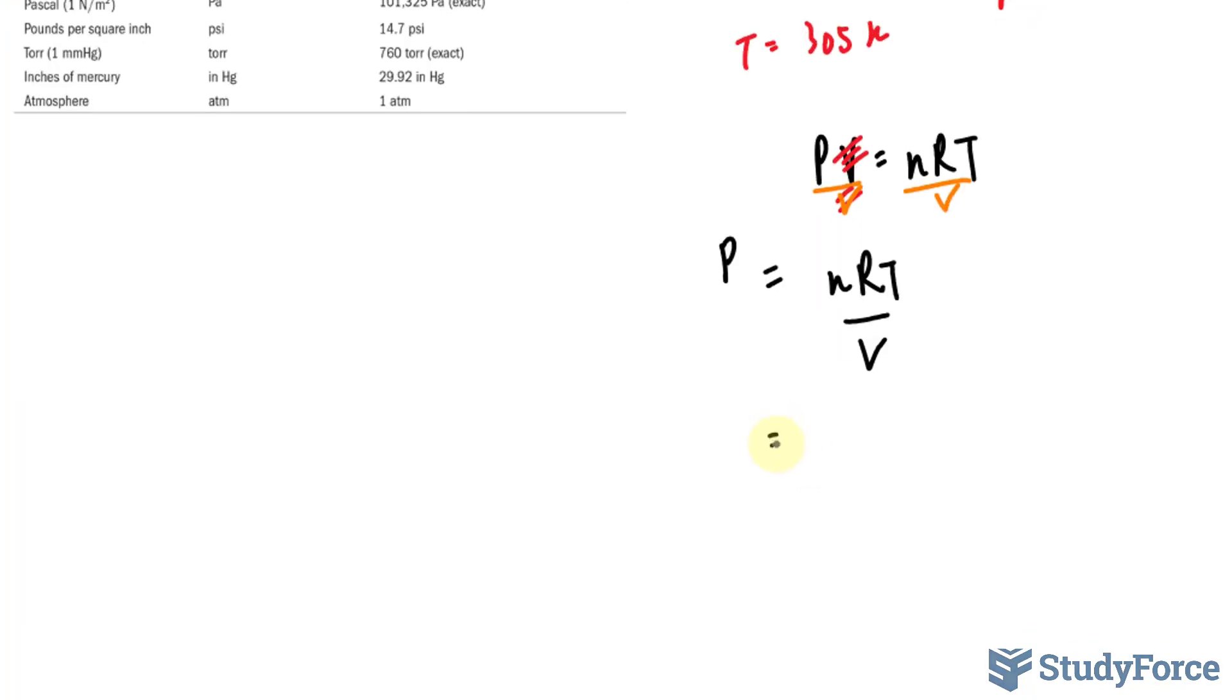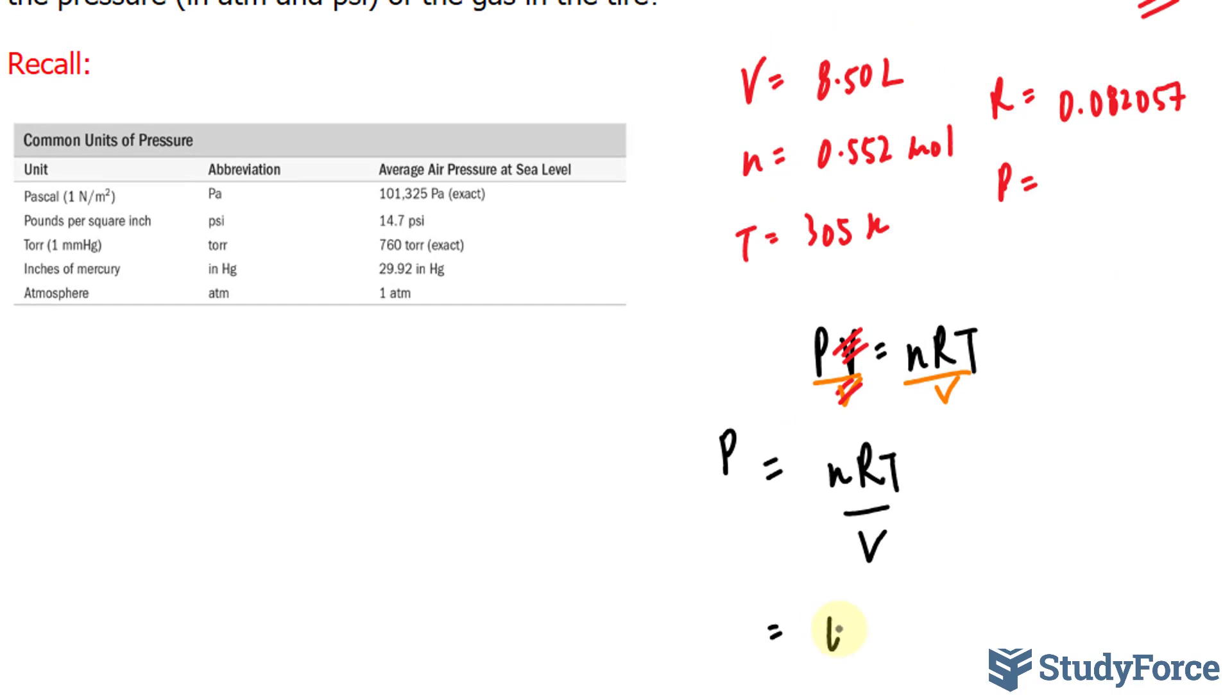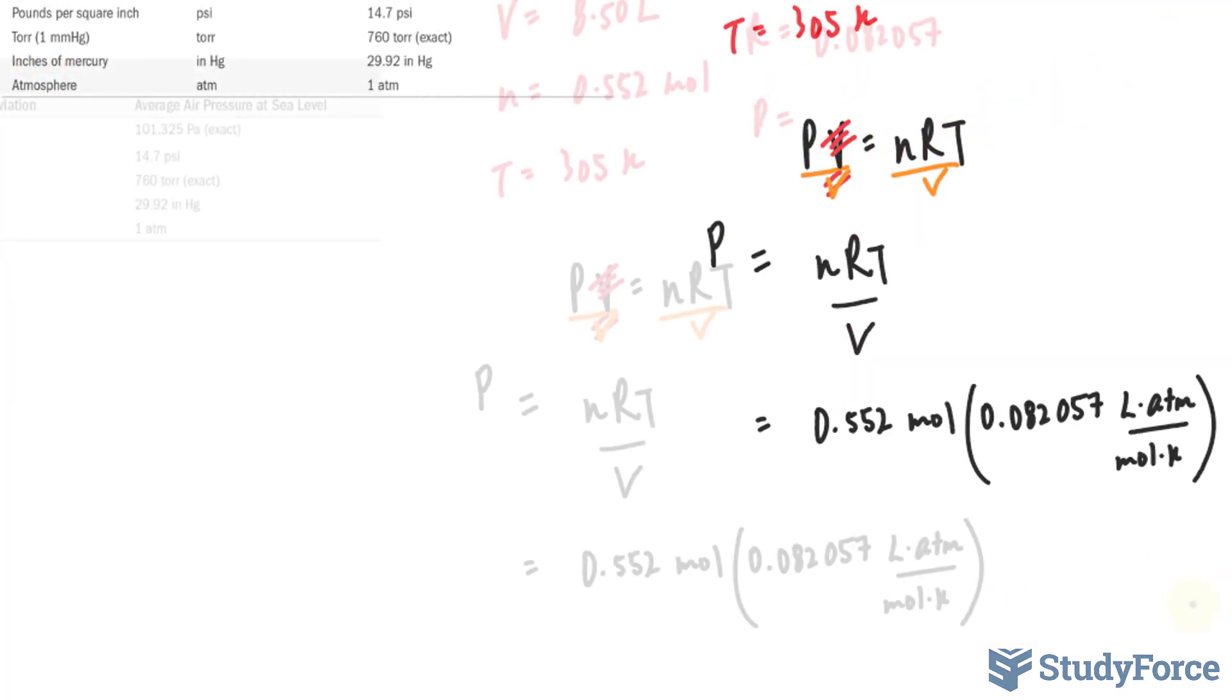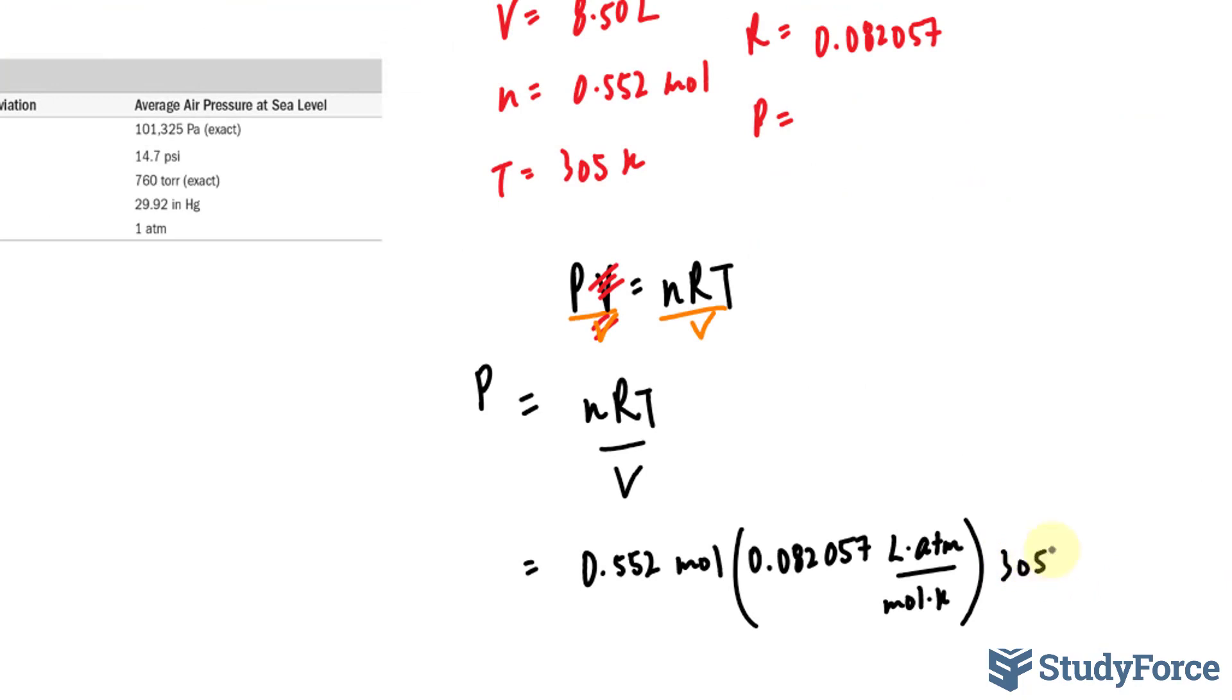Now we can substitute. The number of moles, as written here, is 0.552. And that's being multiplied to this number, multiplied to the temperature, which is 305 Kelvin.